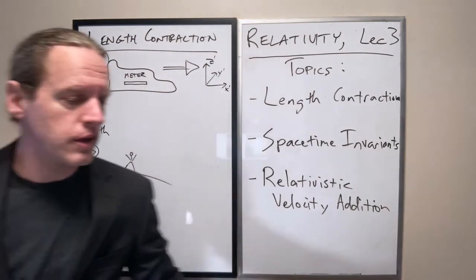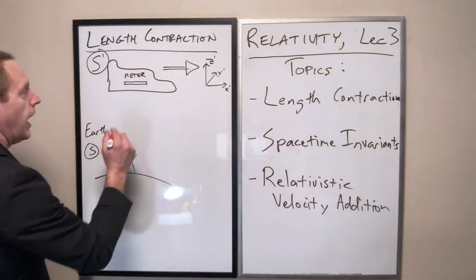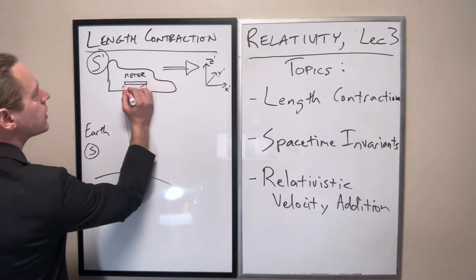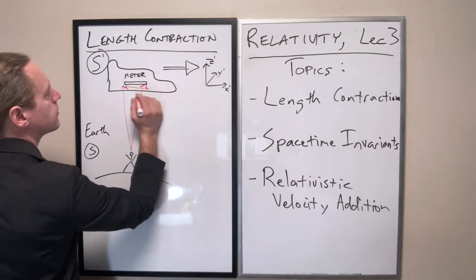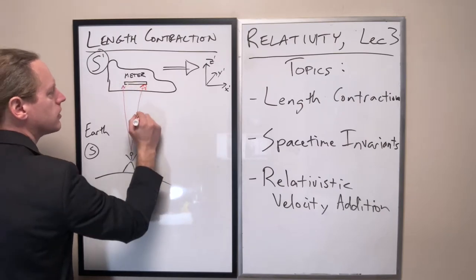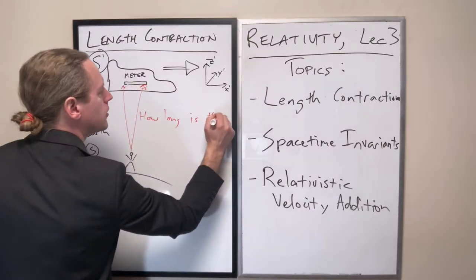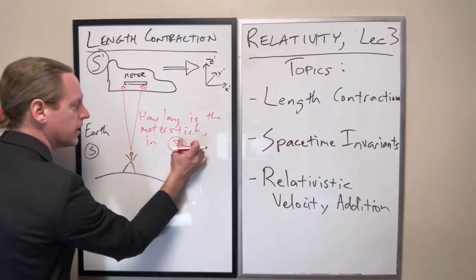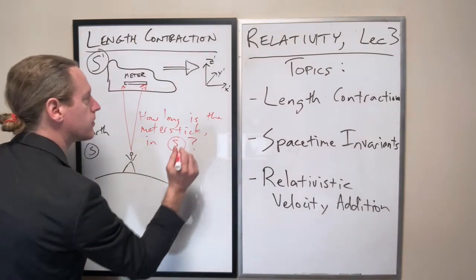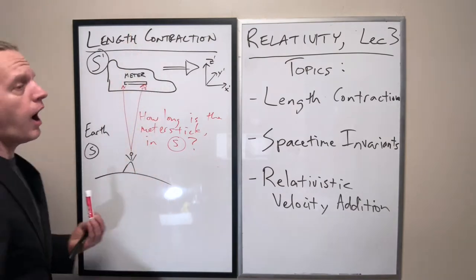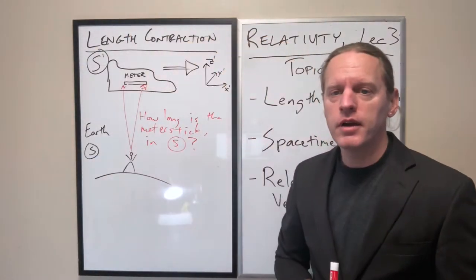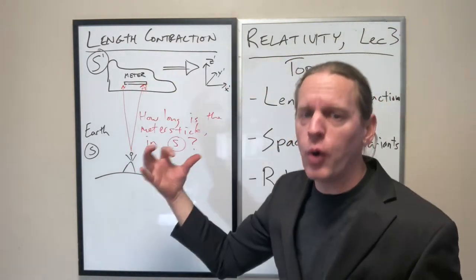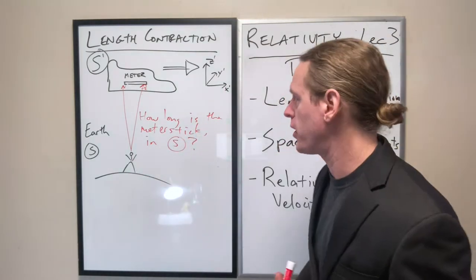And what I want to do here is ask the question, how long would this observer here, what length would he say this meter stick is? So he's going to ask, how long is the meter stick in S? And the reason why I've drawn those two little arrows from him is, well, I'll explain that in a moment. So just like before, we want to assume that lengths are the same, but we know that that may not necessarily be true. And in fact, it will not be true anymore. And you'll see exactly why that is.